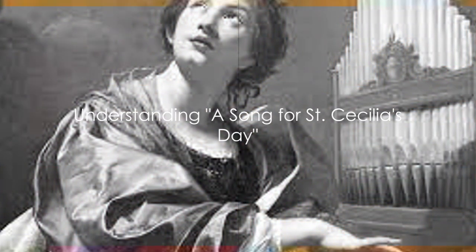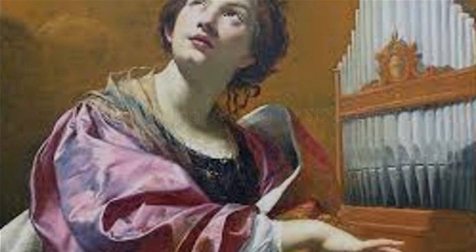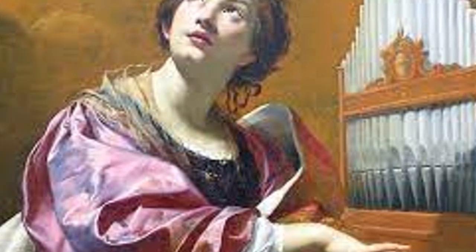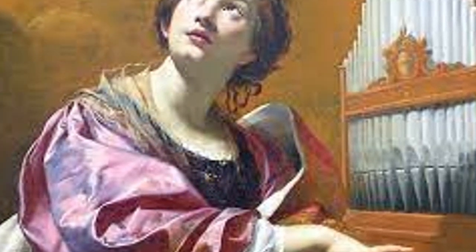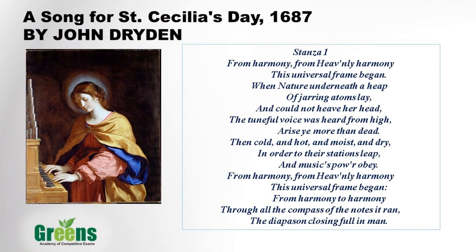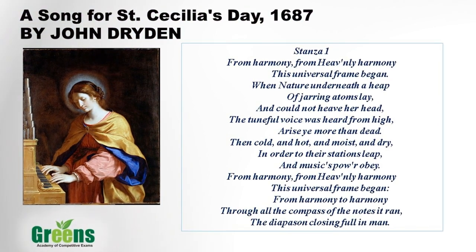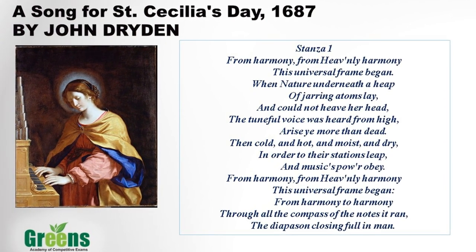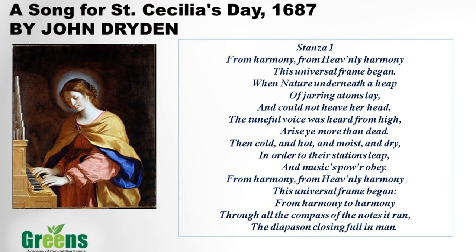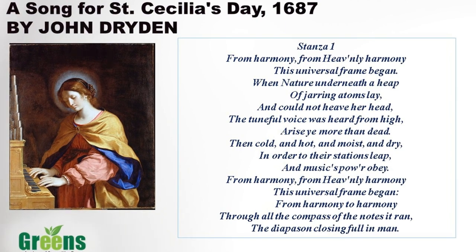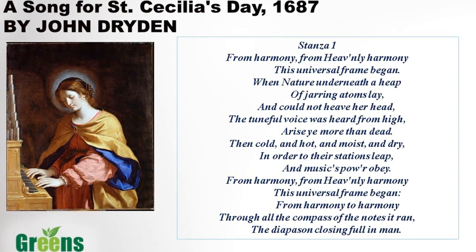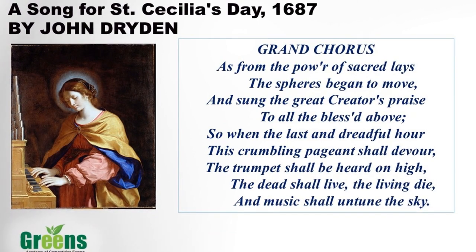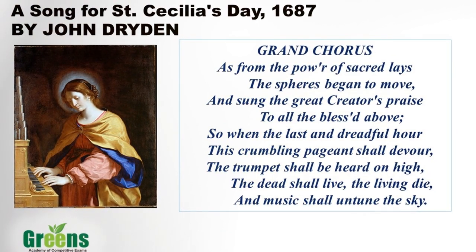Now let's turn our attention to A Song for Saint Cecilia's Day, an ode written in 1687. It is separated into eight stanzas. The first seven verses are sung by a single voice, while the last stanza is meant for the grand chorus. Since this is a song for Saint Cecilia's Day on the 22nd of November 1687, it has a musical structure starting with a single voice and ending with a grand chorus.